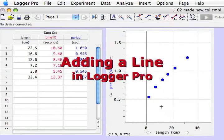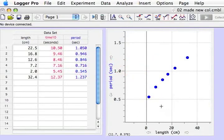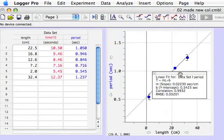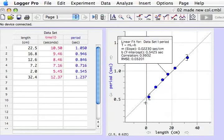We have a table. We have a graph. Now we probably want a model, a mathematical function to try to fit our data. Often the first thing we try is a line. This button with R equals is the linear fit button up in the toolbar. Press it and Logger Pro creates a line. It fits it automatically. Here the correlation is 0.99 which is very high, but don't let that deceive you.